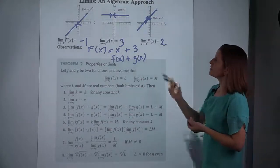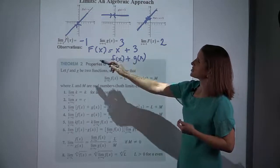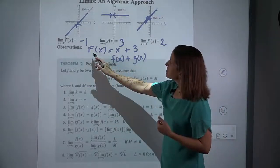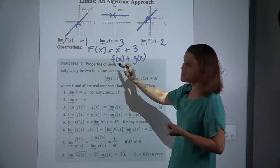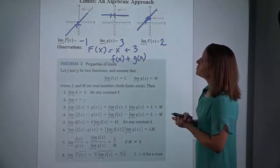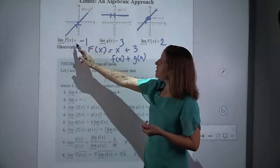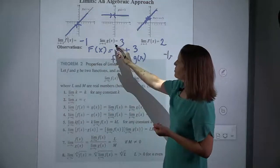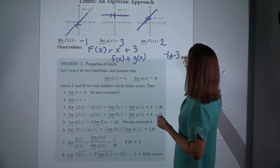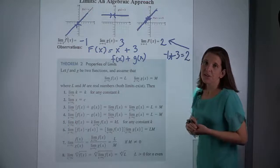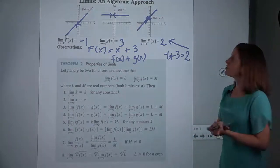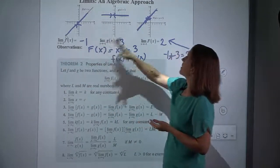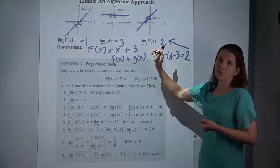What we'd like to know is: if we're approaching the same x value, and if I add a bunch of limit signs, is this still true? Is it true that the limit as x approaches negative 1 of capital F of x equals the limit as x approaches negative 1 of each piece? Notice that the limit as x approaches negative 1 of x was negative 1, and the limit as x approaches negative 1 of g was 3. If we add those, we do get 2. So it's an example to show that if I take the limit of each piece and then add them, I get the same answer as if I had added the values and then taken the limit.